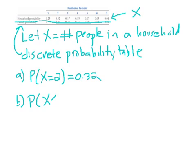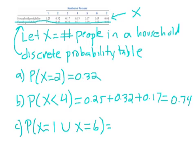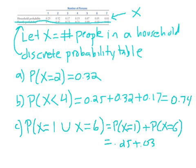Part B: what is the probability that X is less than 4? Less than 4 means the possible values are 0, 1, and 2. That's 0.25 plus 0.32 plus 0.17, which equals 0.74. For part C, what is the probability that X equals 1 or X equals 6? These are disjoint events, so it's the probability that X equals 1 plus the probability that X equals 6, which is 0.25 plus 0.03 equals 0.28. These are things we've done before, just with a little extra notation on top.